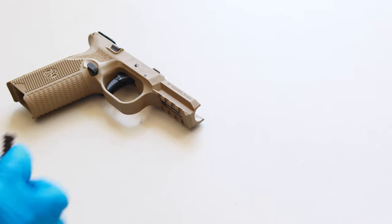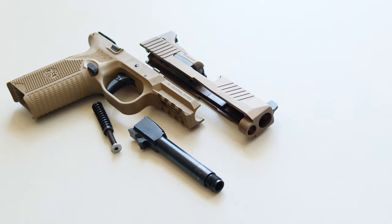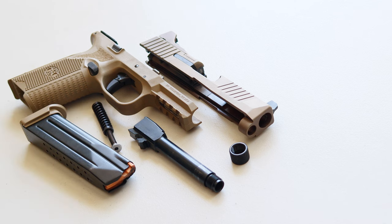You have your frame, your recoil spring, the slide, the barrel, your thread protector, and your magazine. This is as far as you need to go for a basic field stripping clean.